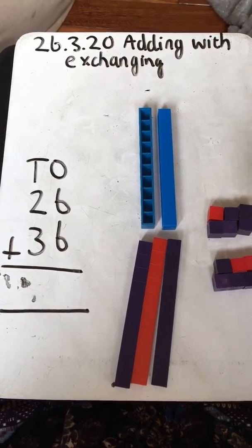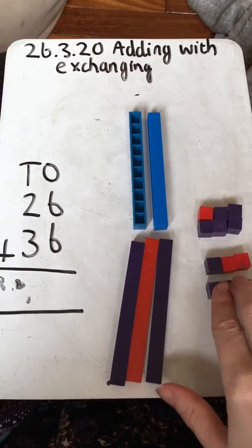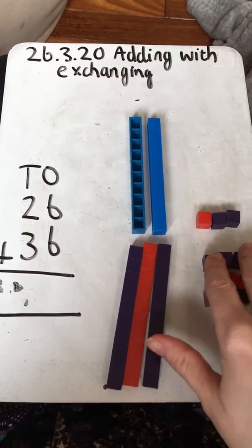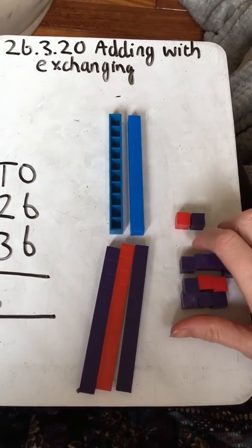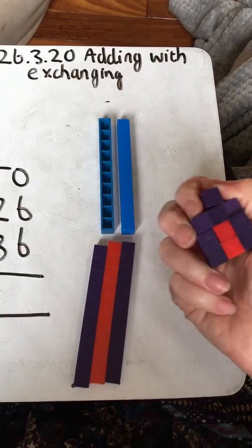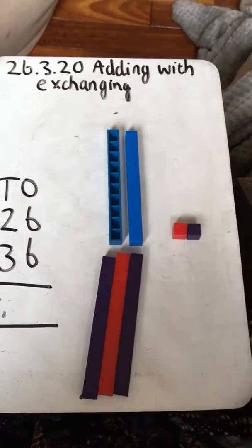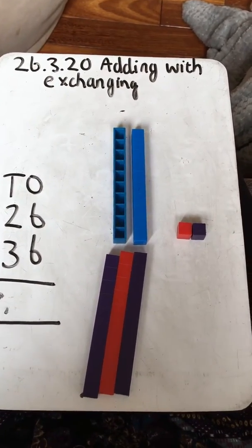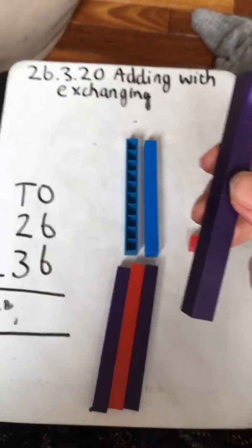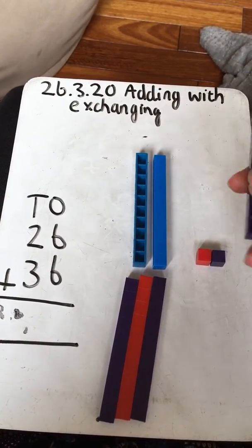So I'm going to get 10. I've got three, oh I'm going to try and count in threes. Three, six, nine, and then I'm going to get 10 and exchange these 10 ones for one lovely ten.